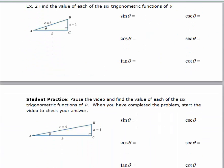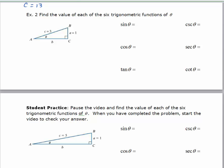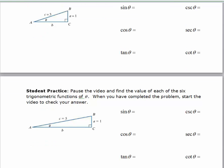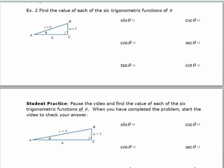You are required to know the definitions of the six trig functions. Let's try another one. Find the value of each of the six trigonometric functions of theta. Again, we have a missing side. We know that we want to find b. We know that 3 squared equals 1 squared plus b squared, so b squared equals 9 minus 1, which is 8. So b is going to equal the square root of 8. We don't need the plus or minus because we know we're dealing with a triangle, so the length is going to be positive.